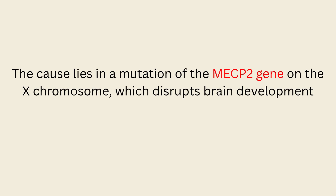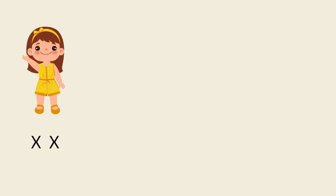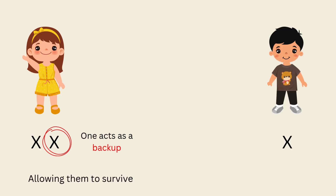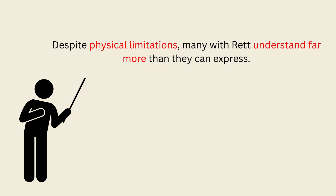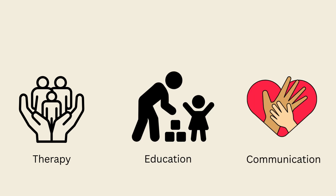The cause lies in a mutation of the MECP2 gene on the X chromosome, which disrupts brain development. Because girls have two X chromosomes, one acts as a backup, allowing them to survive. Boys with only one X are typically affected much more severely and often do not survive infancy. Despite physical limitations, many with Rett understand far more than they can express. With therapy, tailored education, and creative communication methods, their voices — though unconventional — can still be heard.